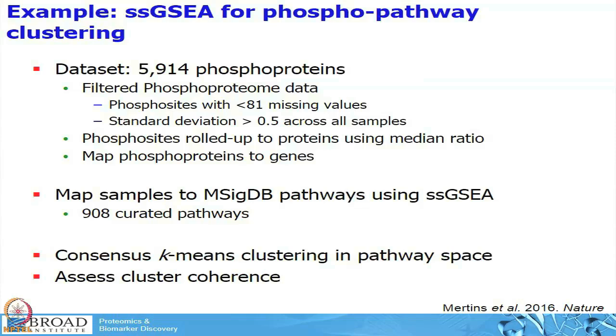You would do that by, for example, taking the average per gene, or the median, or by looking at the most variable site across your samples — variance means information, so that is why you would pick that one. Here is one example where we employed this approach. This is from the breast cancer study published in Nature two years back, where we started with roughly 6,000 phosphoproteins and performed this same type of analysis. We used single-sample GSEA to map these phosphoproteins, which we first collapsed to genes using a median ratio.